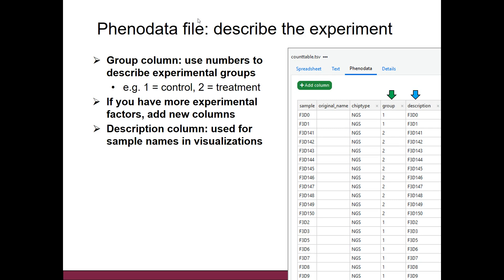If you have text, it's going to take the text in alphabetical order, which can cause problems later on. You can obviously have more groups than just two — you just add more numbers and assign your samples to those groups. If you have more experimental factors — not just one thing, but several, for example time, dose, or whatever — then you can add new columns. You give a name to the new column and then, using numbers, describe the value for that additional experimental factor.